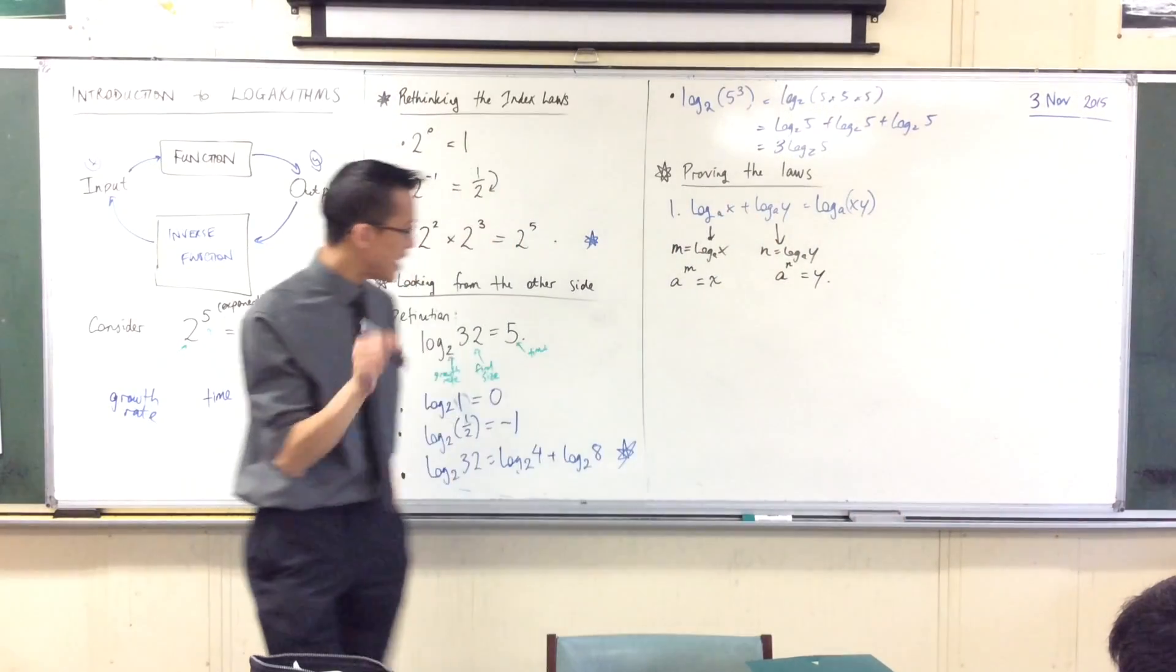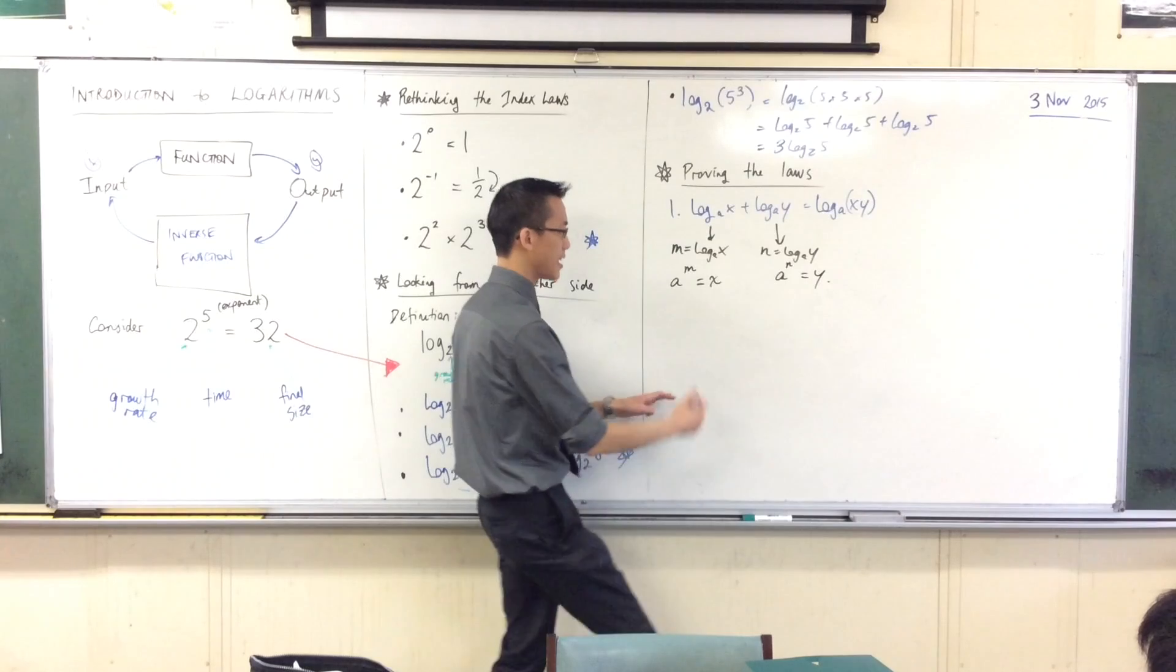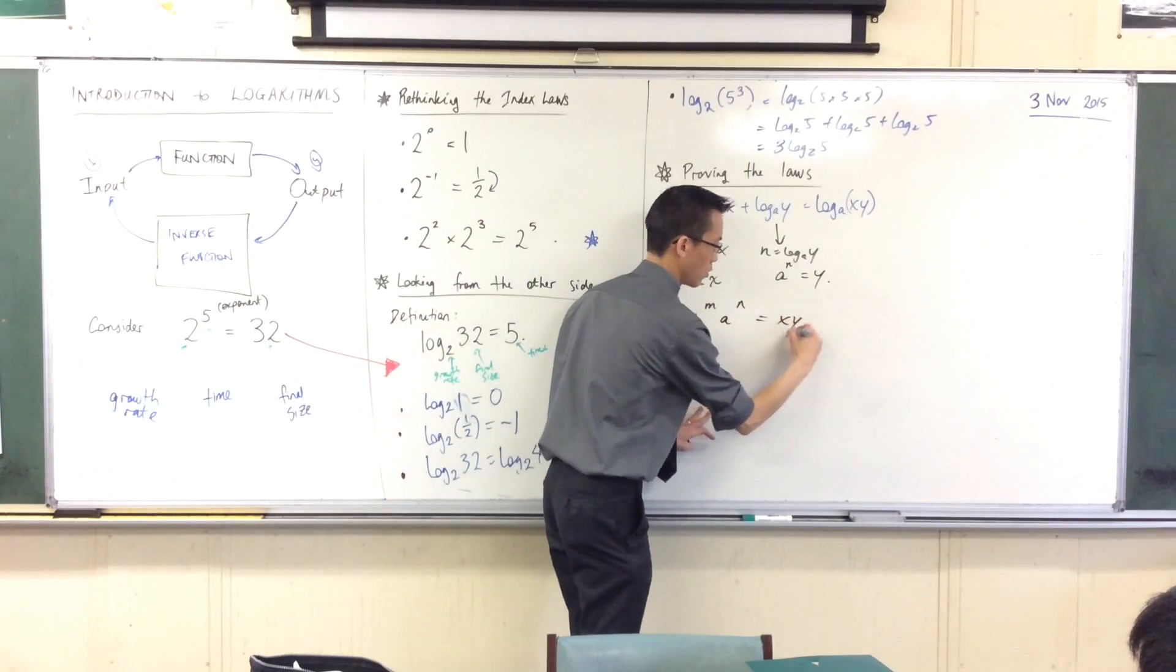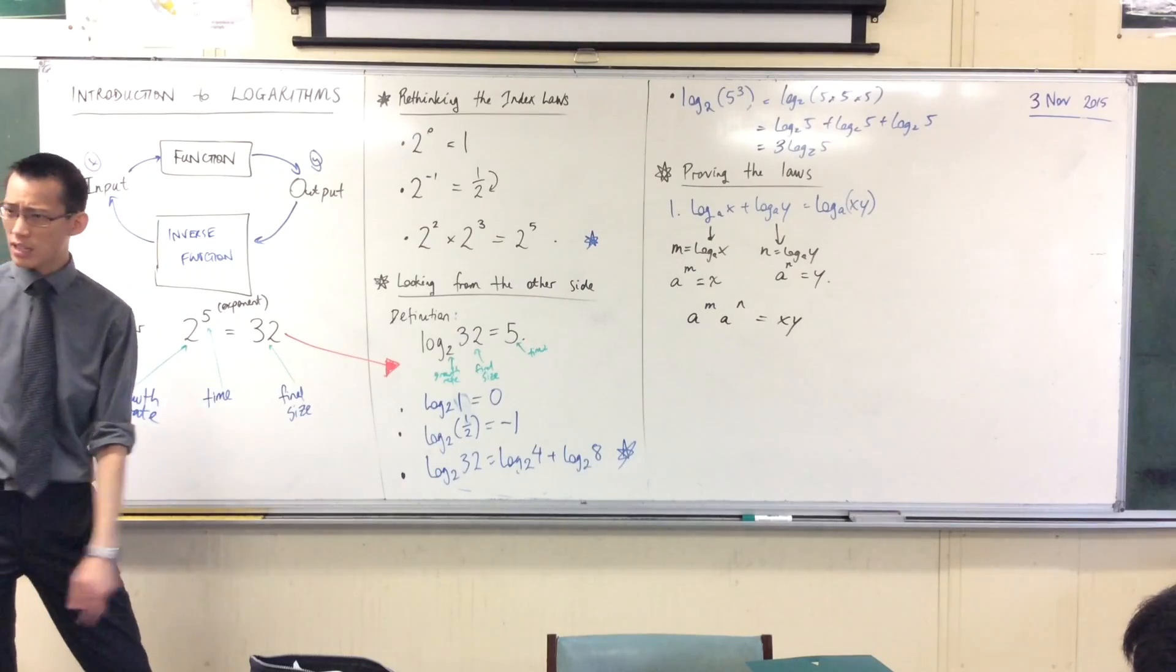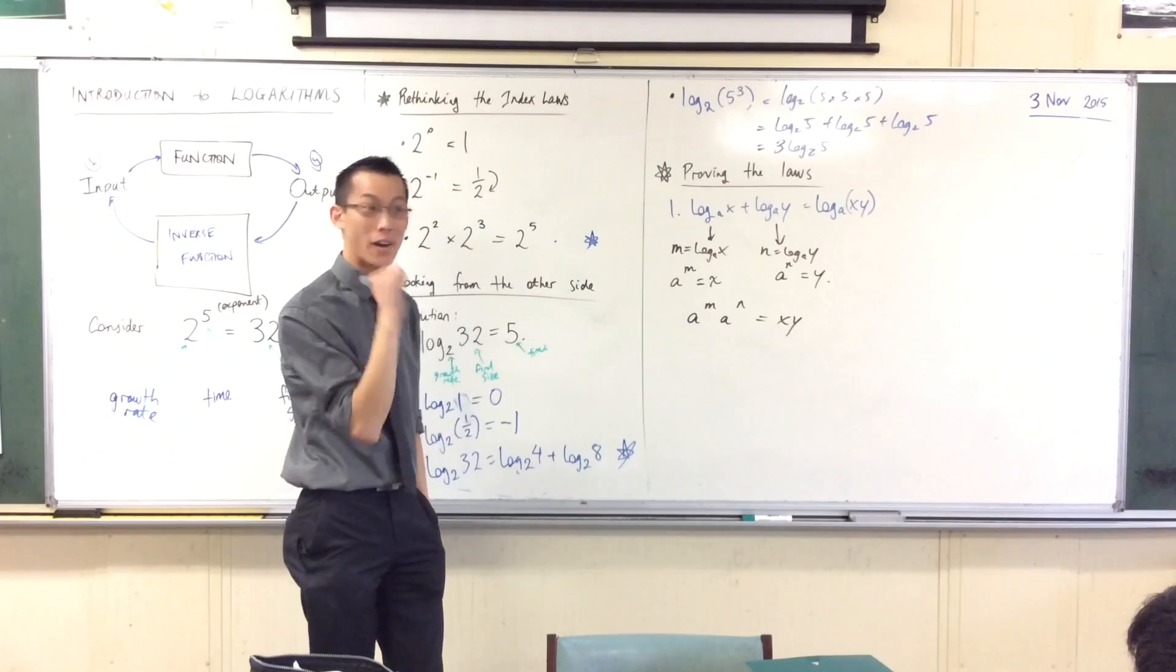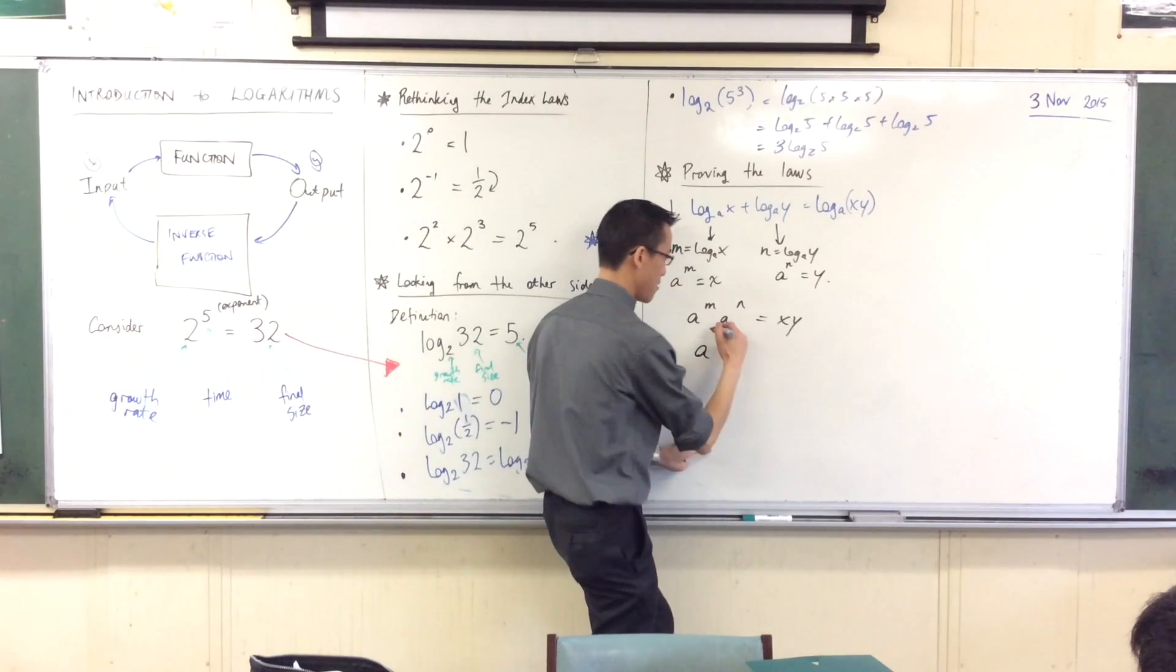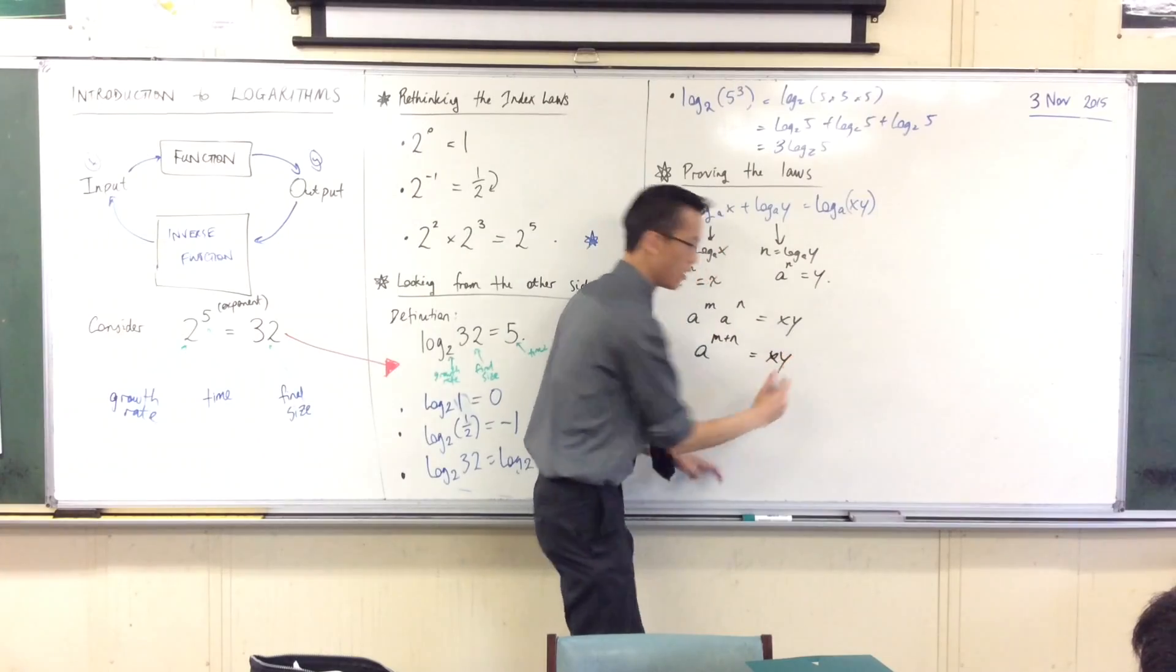Now, knowing your index laws, I can take these two guys and I can multiply them. I can say, a to the power of M times a to the power of N, that's X, Y. Do you agree with that? I've just substituted them directly. So with your index laws, what's that left hand side going to become? What happens when you multiply numbers with the same base? You add their indices. So this is a to the power of M plus N. And the right hand side, I haven't changed.